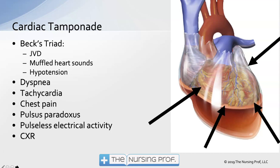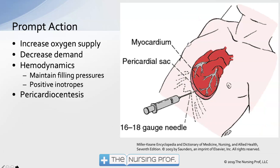Pulseless electrical activity is an end result we hope doesn't happen. A chest x-ray is usually our first indication — we'll see fluid around the heart or an enlarged pericardial area. Our prompt action is to increase oxygen supply since the patient is being hypoperfused, decrease demand, treat pain, maintain hemodynamics and filling pressures, and use positive inotropes to help the heart beat harder. Ultimately we need to get rid of the fluid via pericardiocentesis — a 16-18 gauge needle inserted into the pericardial sac.